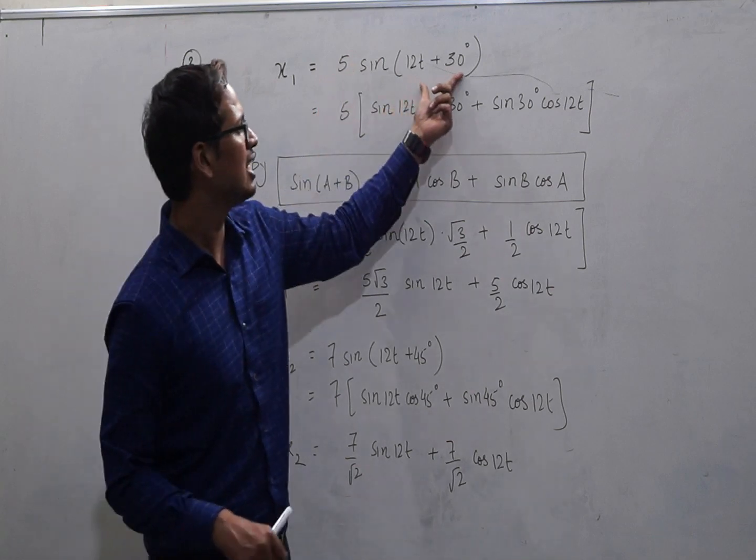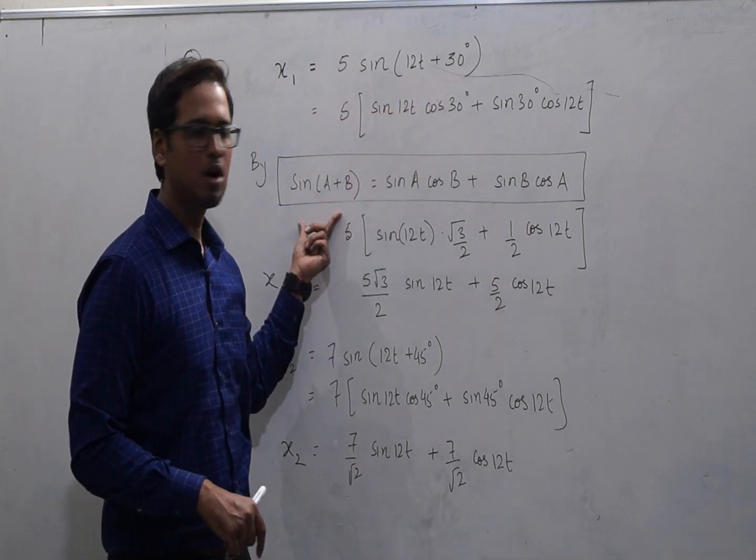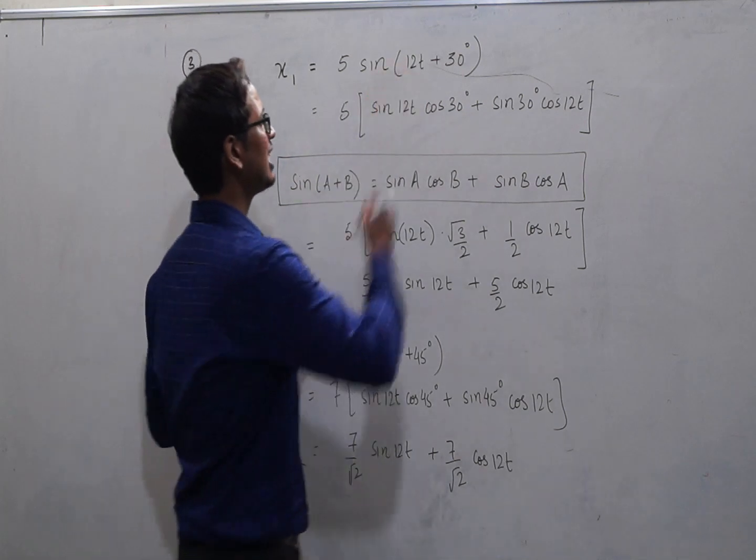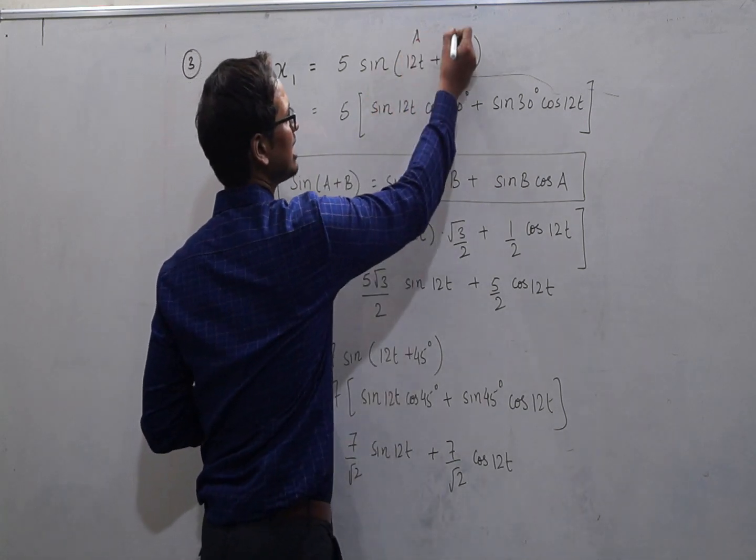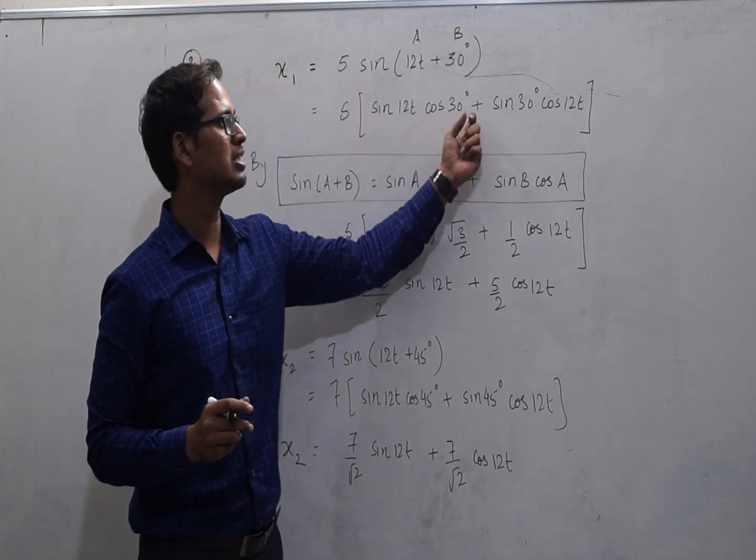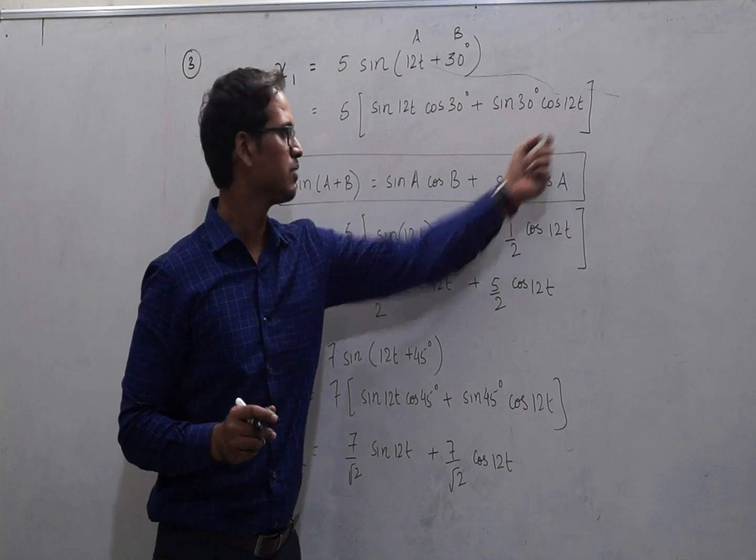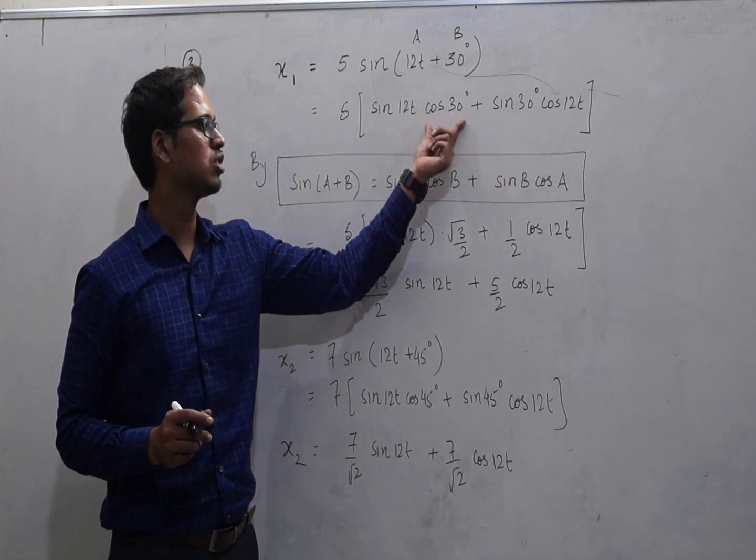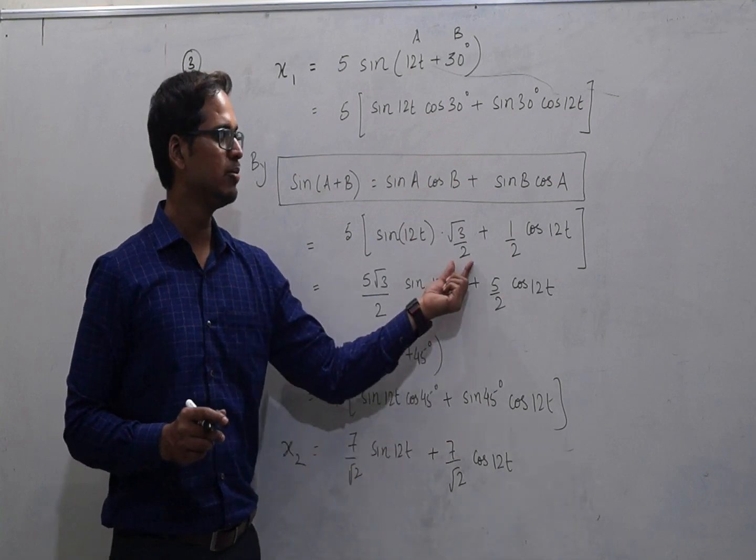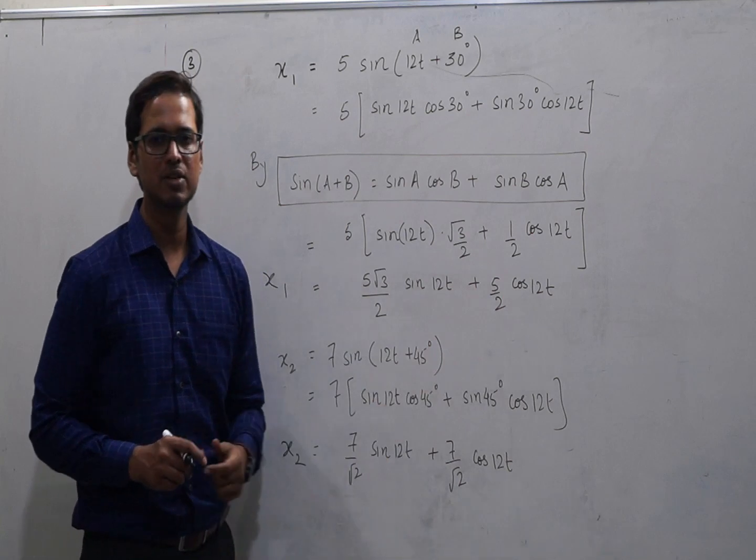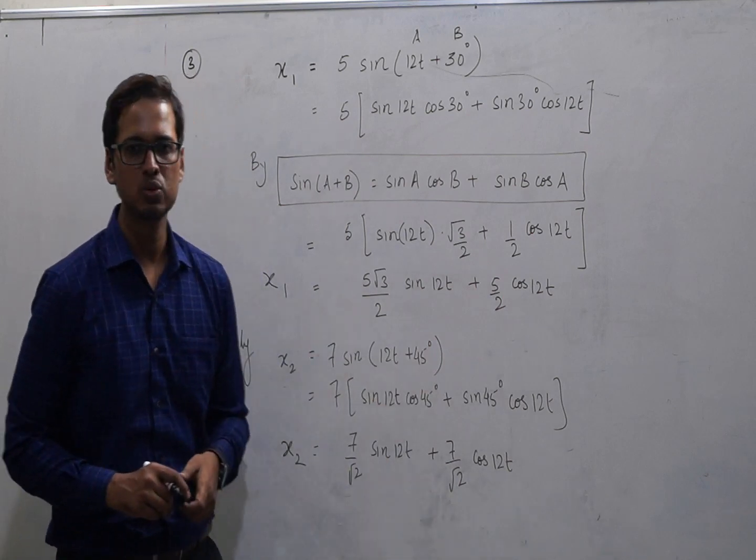And for this angle, I will be using this compound angle formula of sine a plus b and write it as sine a cos b plus sine b cos a. We very well know cos of 30 degrees is root 3 by 2, sine of 30 degrees is half, and finally the result can be simplified as 5 root 3 by 2 sine 12t plus 5 by 2 cos 12t.